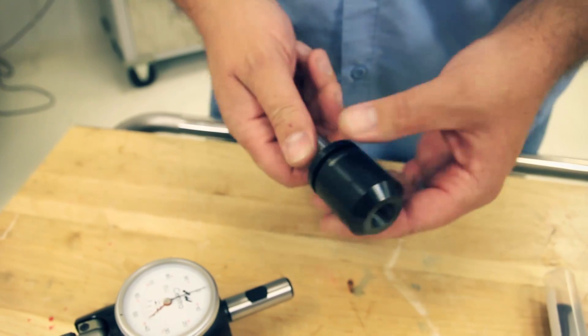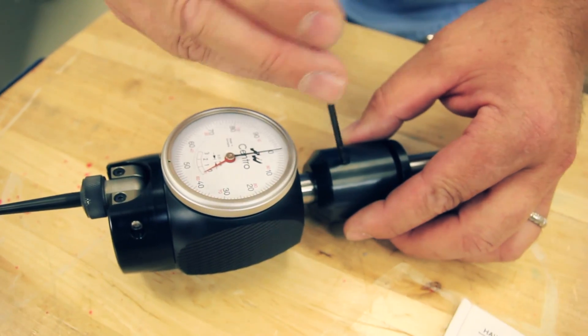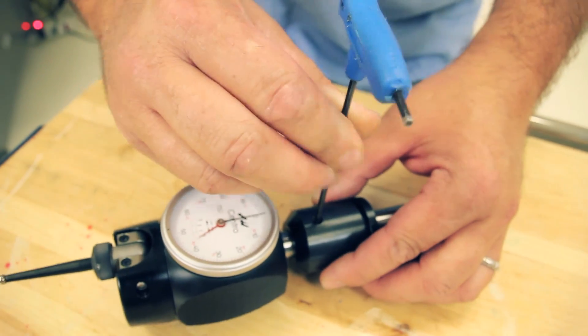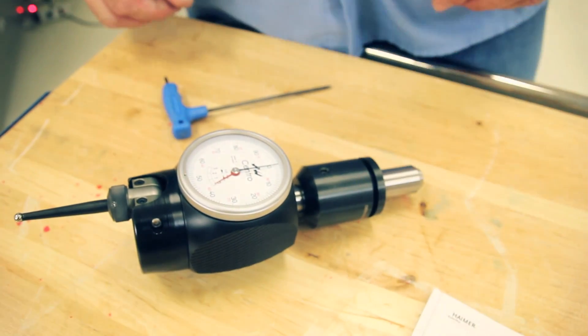The arbor for the Tormach machines. Again, you don't have to over tighten it. Just a good snug job is all it needs.